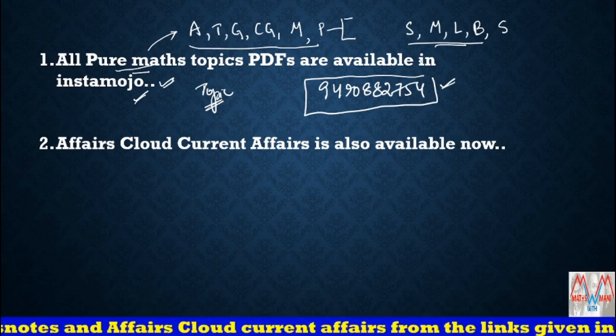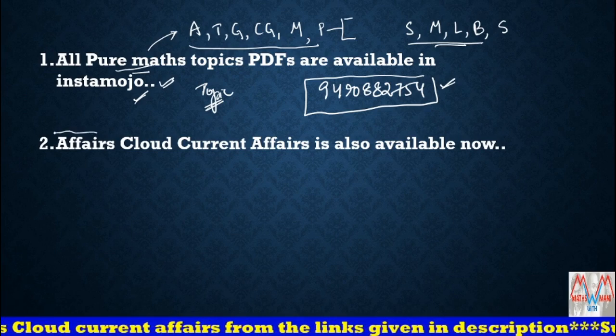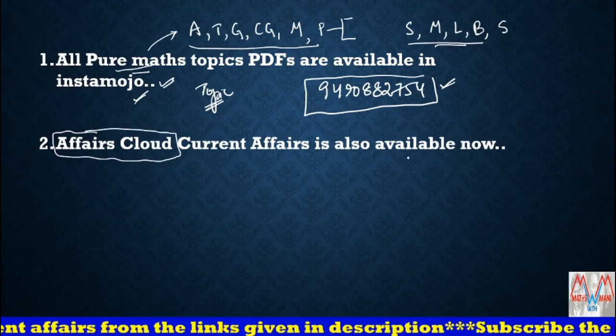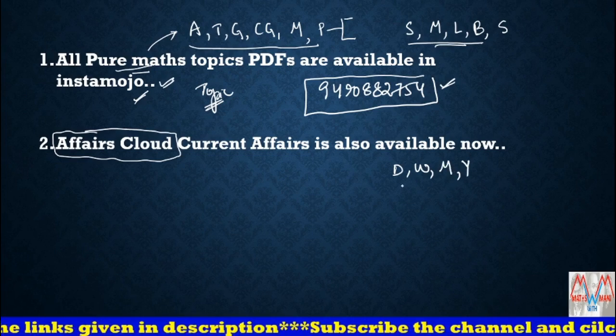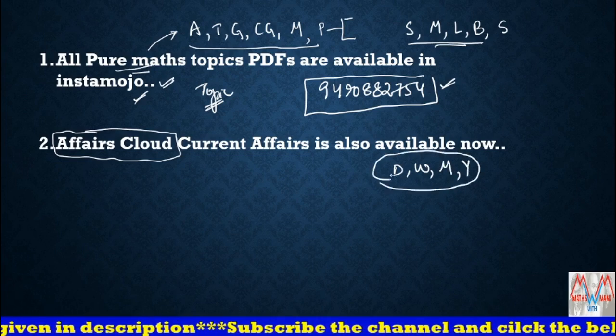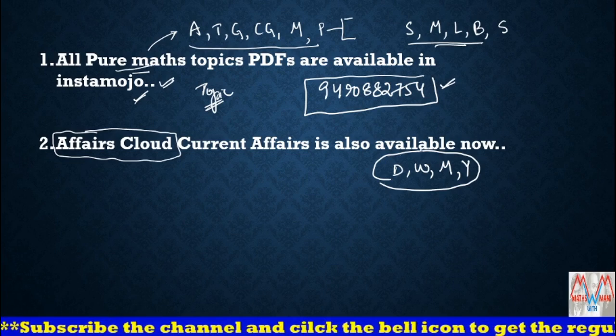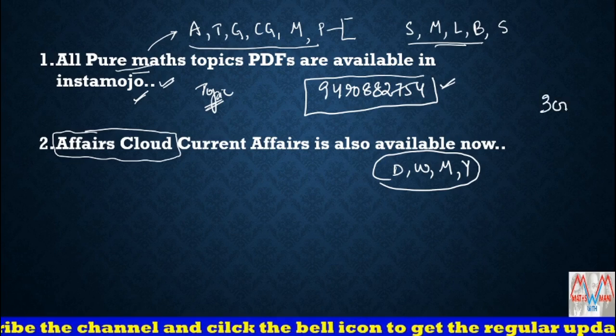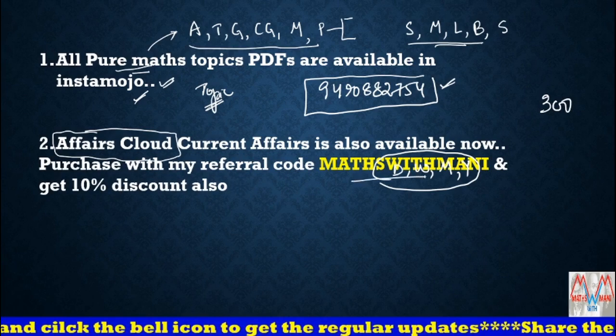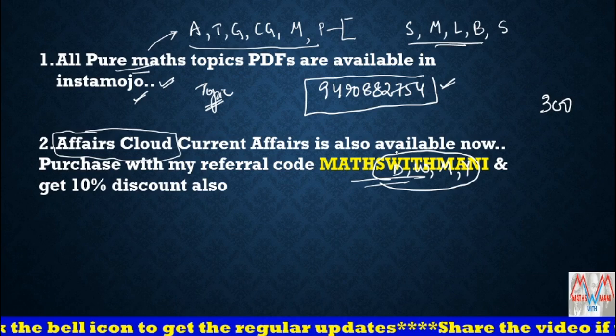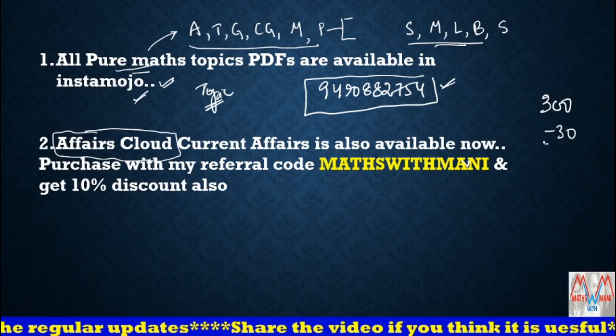Second thing is about current affairs cloud. They are providing current affairs daily, weekly, monthly, and also yearly. If you get daily, weekly, and monthly, you can get it for 300 rupees. If you use the referral code Maths with Money, you can get 10% off, which is 30 rupees discount. You can get it for 270 rupees.